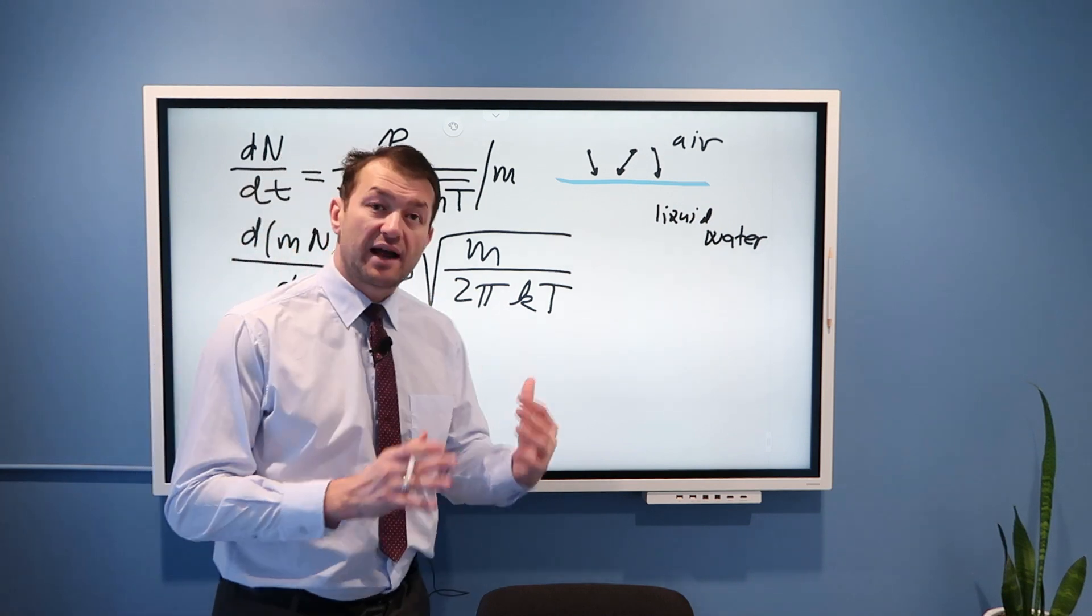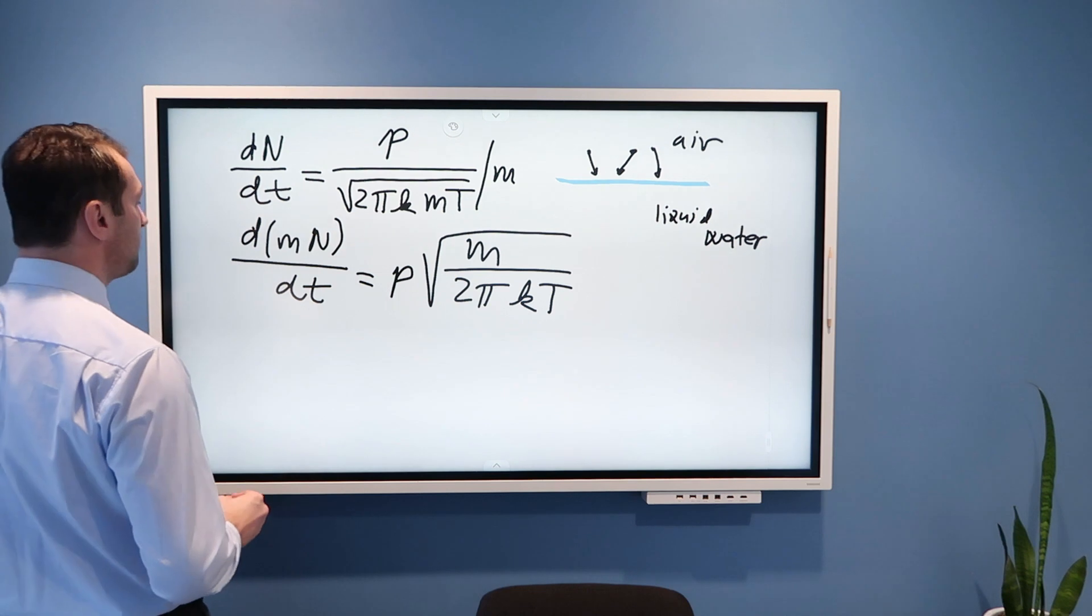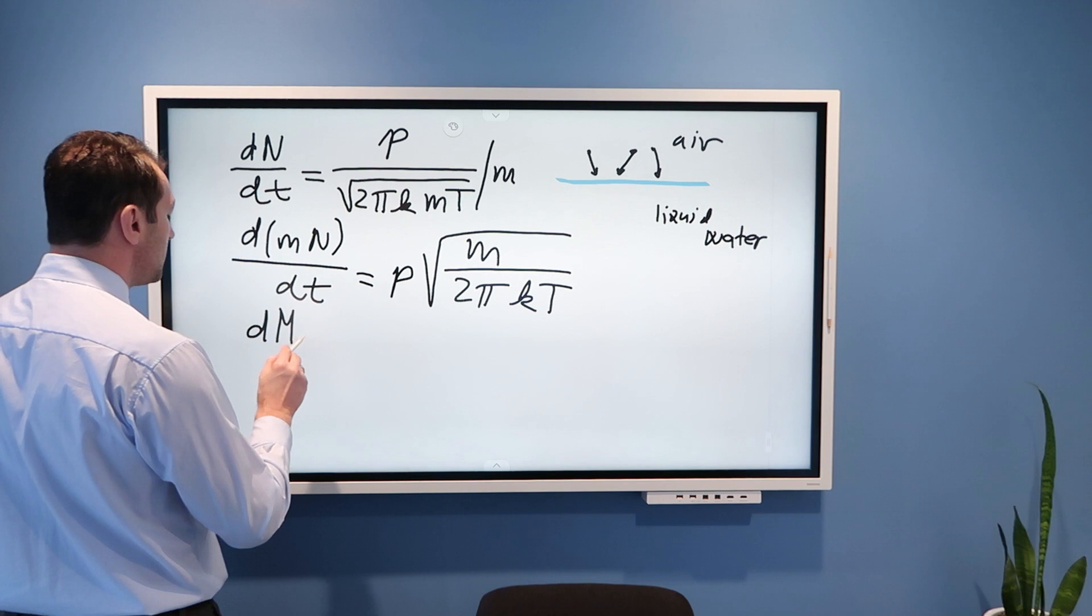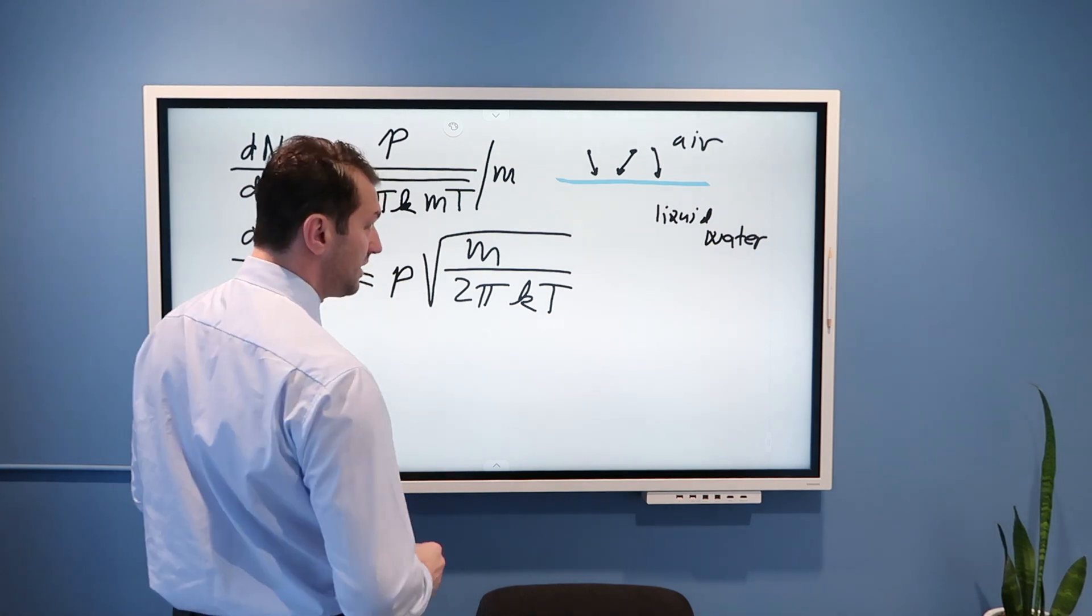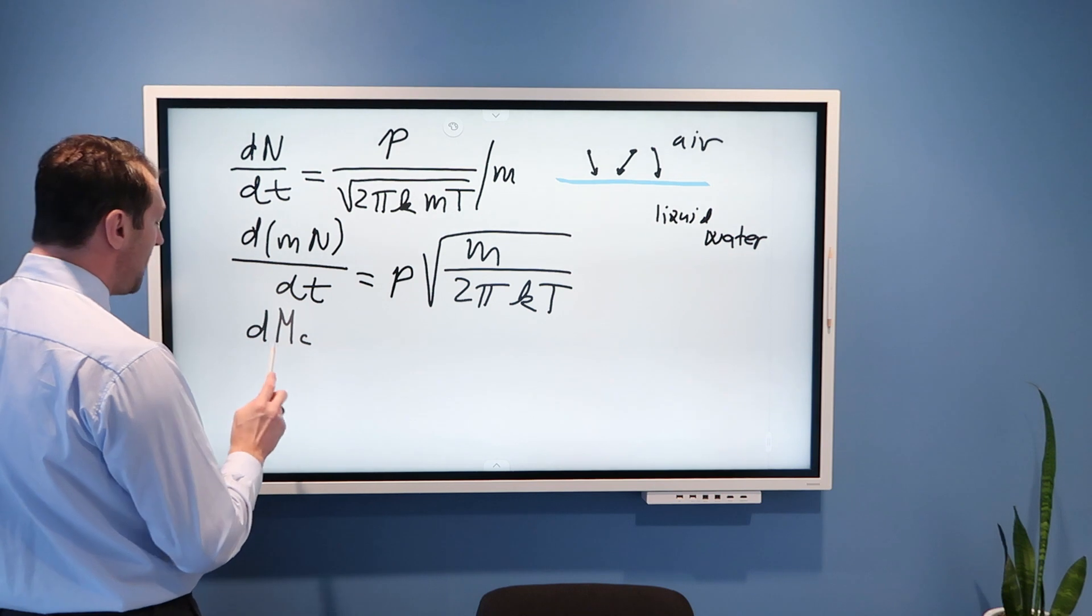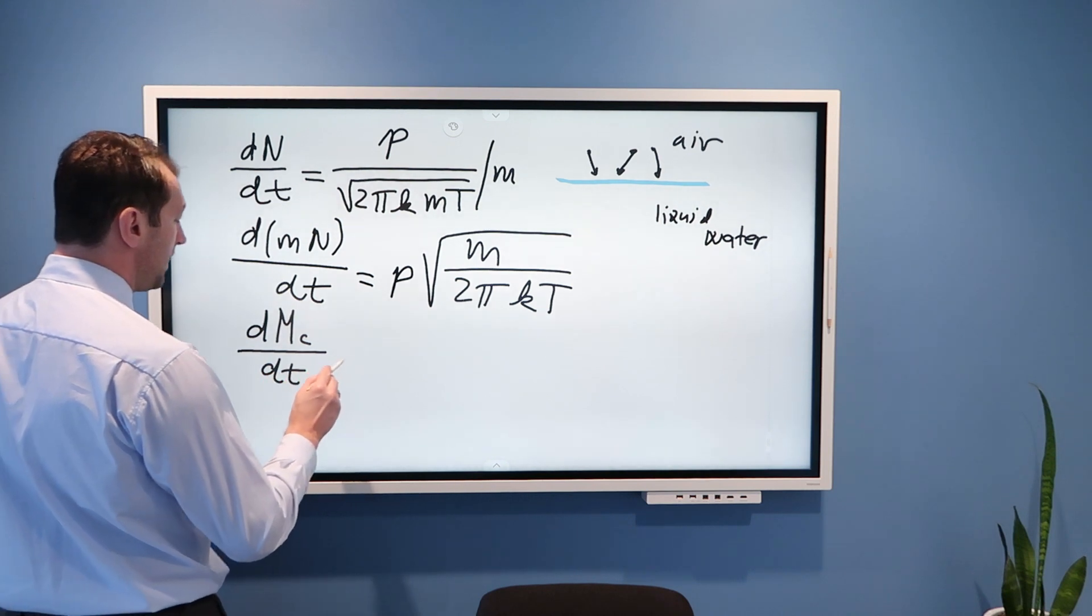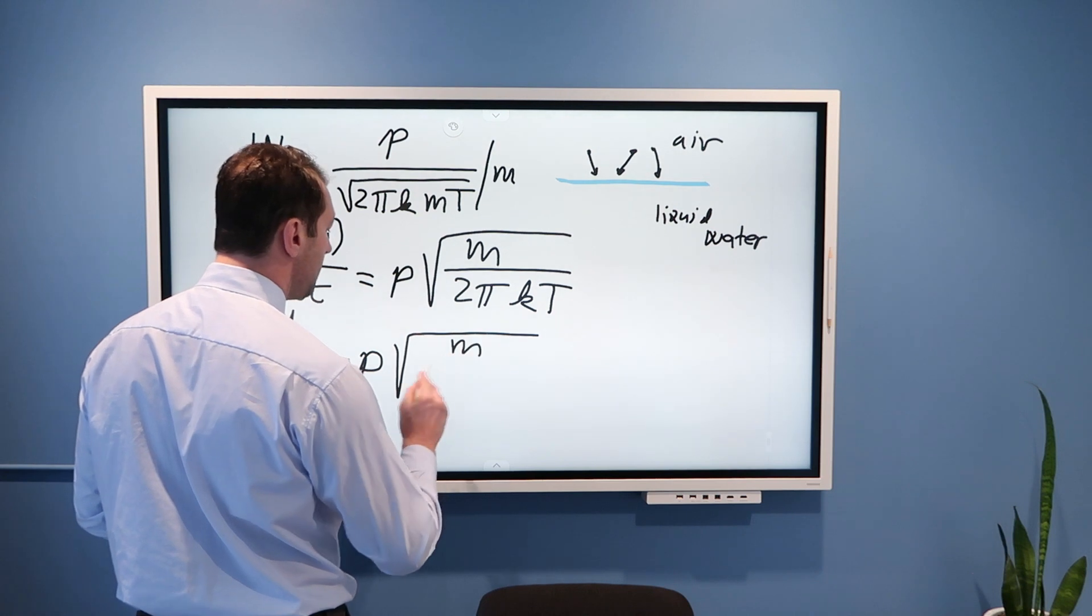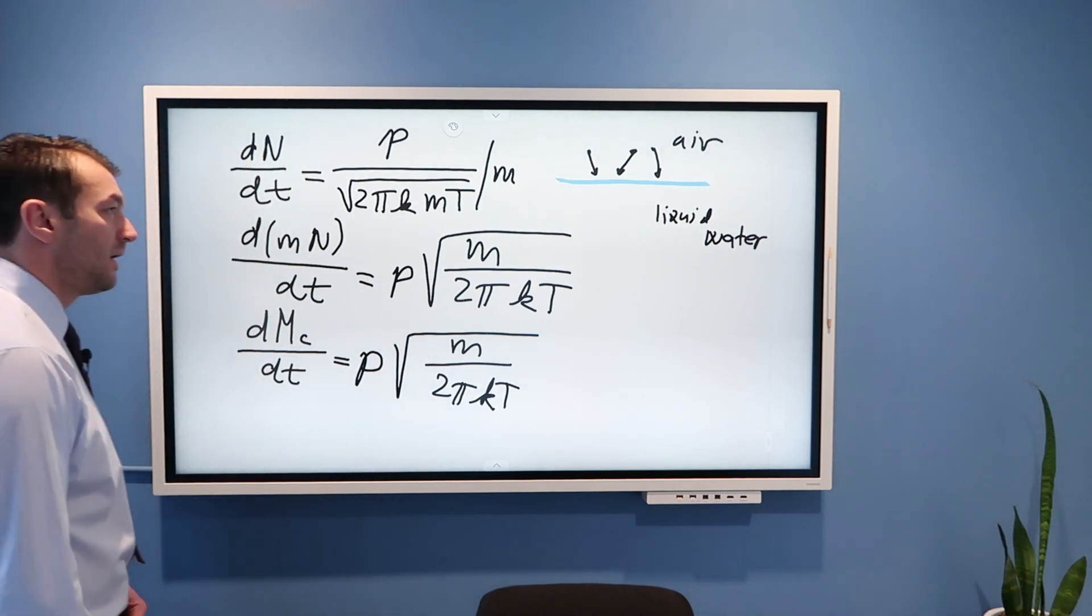But m times n is the flux, mass flux of these water vapor molecules hitting the surface of the water. So I will call this quantity dmc/dt. C because I will say that all of these are condensing, as I just made this argument. So mass flux of water vapor molecules that are condensing is this, and that is equal p square root m divided by 2πkt.